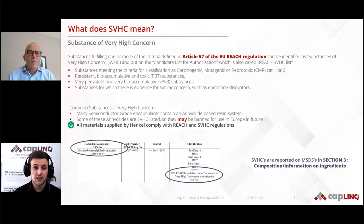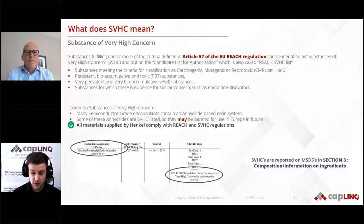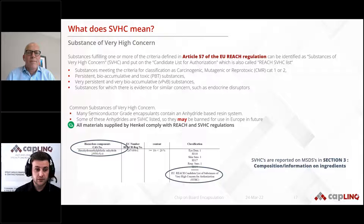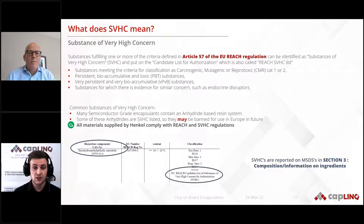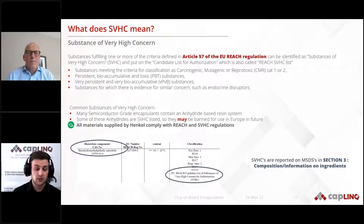One important article within the REACH regulation is SVHC — Substances of Very High Concern. This could be anything from carcinogenic to very bioaccumulative: basically substances hazardous for the environment, human health, or both. Many semiconductor encapsulants contain an anhydride-based resin system. Some of these anhydrides are SVHC-listed and may be banned for use in Europe in the future. All materials supplied by Henkel comply with all REACH and SVHC regulations, and if an SVHC component is used in a formulation, Henkel will note it in the SDS.